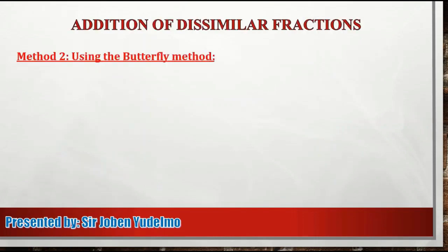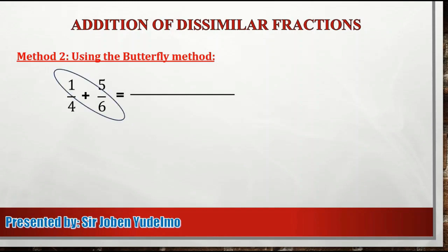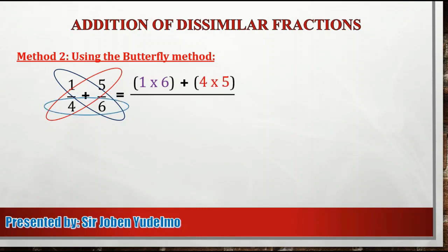Another way to add dissimilar fractions is by using the butterfly method. Paano naman itong butterfly method? So halimbawa, ang ating given ay 1/4 plus 5/6. So una natin gagawin ay i-cross multiply natin ang numerator ng ating unang fraction sa denominator ng ating second fraction. So that's equal to 1 times 6. Sunod, copy the operation — that's addition. Then, imumultiply naman natin ang numerator ng ating second fraction sa denominator ng ating first fraction. So that's equal to 4 times 5. Next, imumultiply natin ang ating mga denominators. So that's equal to 4 times 6.